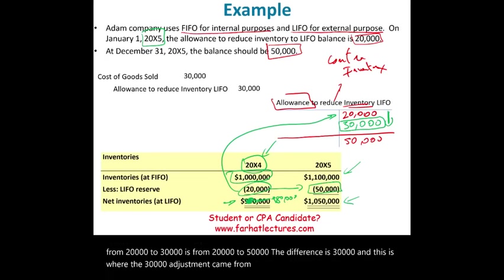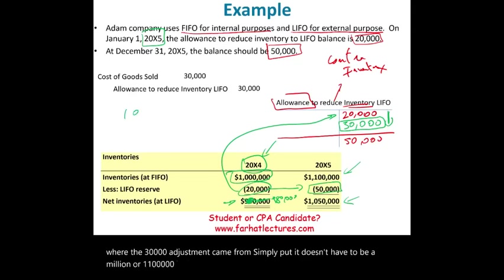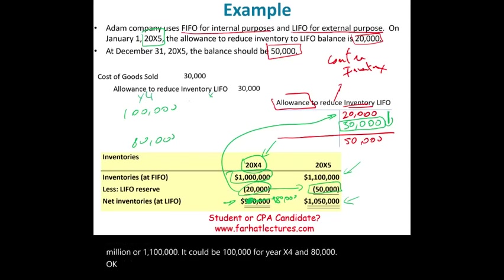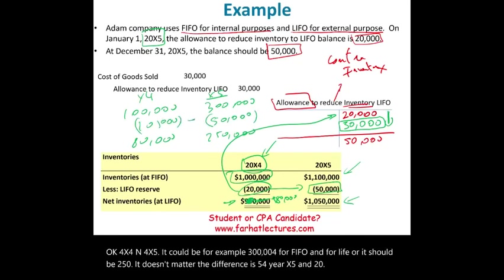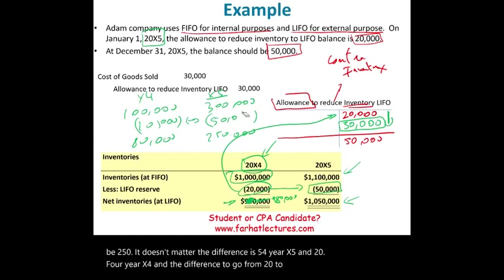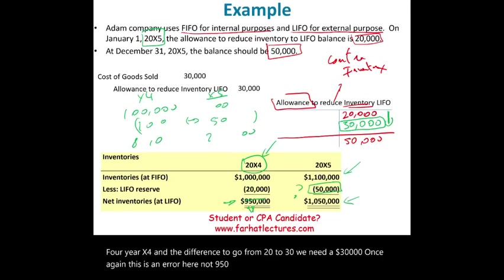Simply put, it doesn't have to be those exact numbers. It could be, say, $100,000 for year X4 under FIFO and $80,000 under LIFO, and for X5 it could be $300,000 for FIFO and $250,000 for LIFO — it doesn't matter. The difference is $50,000 for year X5 and $20,000 for year X4, and the difference to go from $20,000 to $50,000 requires a $30,000 adjustment. Note: there was an error earlier — the LIFO figure for X4 should be $980,000, not $950,000.